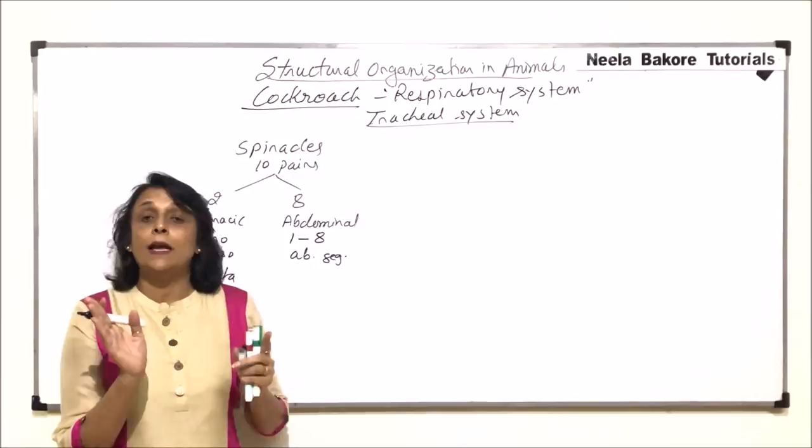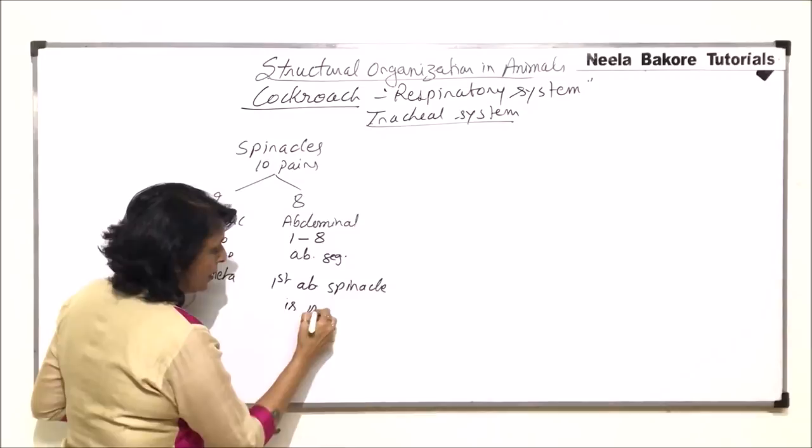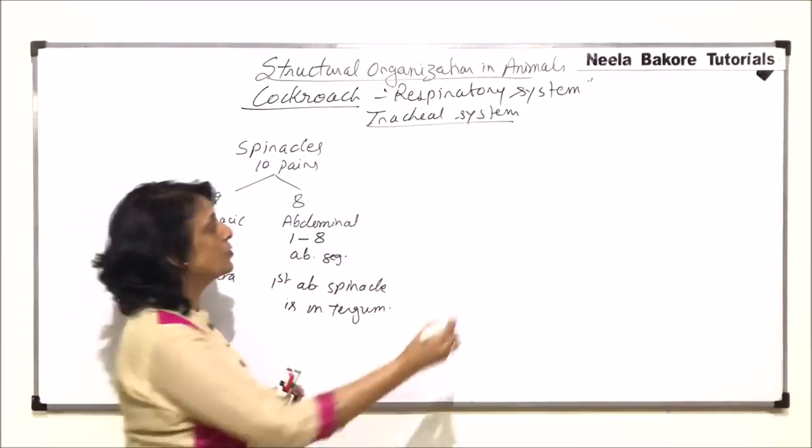Most of these spiracles are present on the lateral wall, that is the pleura, except for the first abdominal spiracle, which is on the tergum — that is, on the dorsal side. All others are on the pleura side, meaning on the lateral wall.